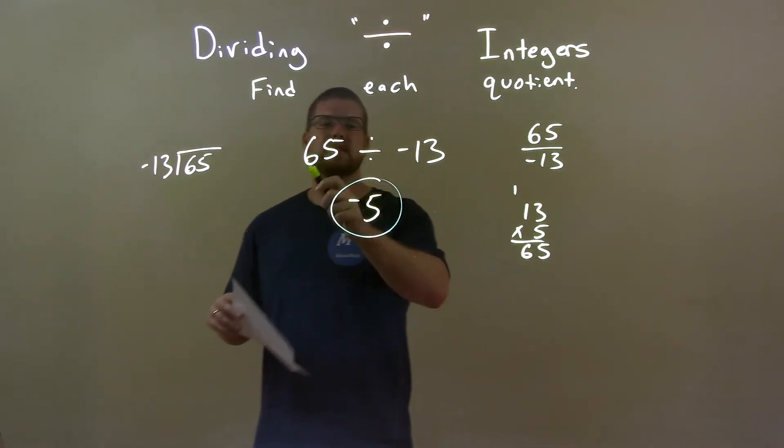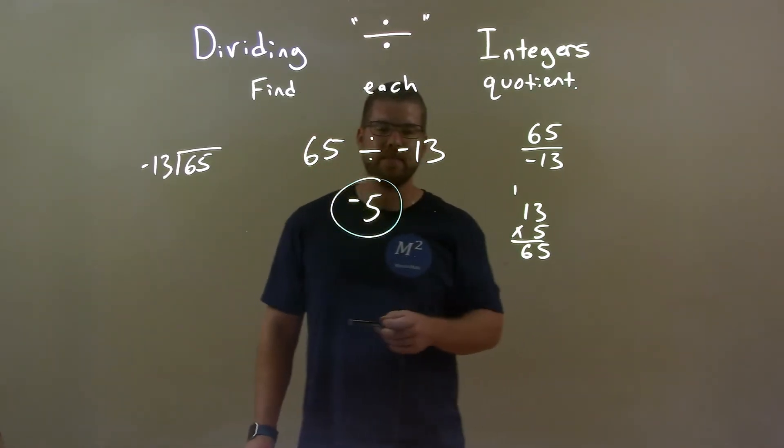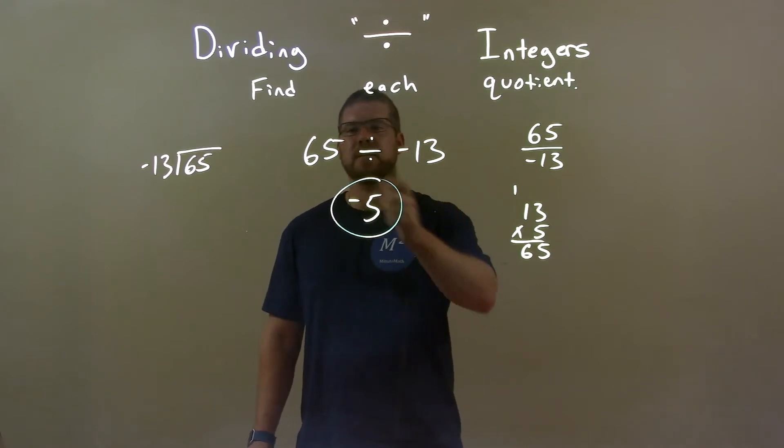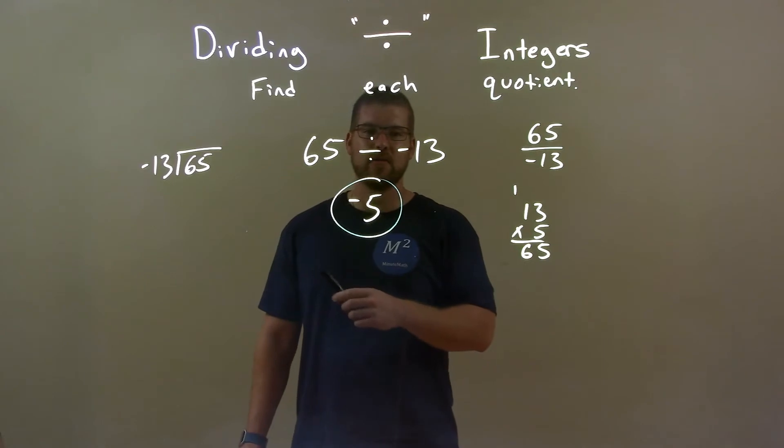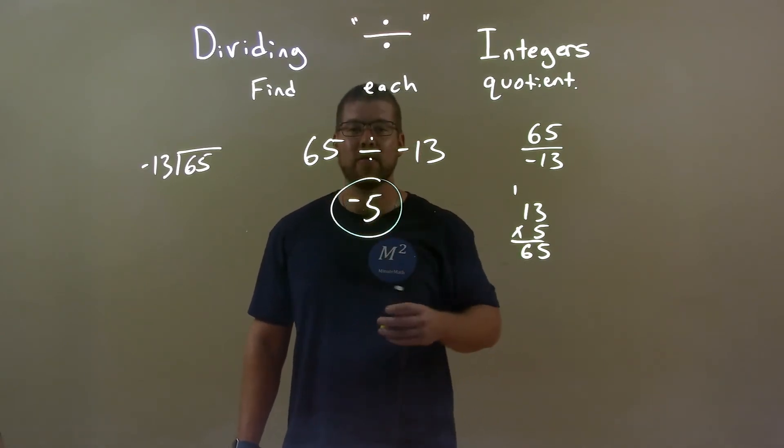So quick recap. We're going to know that 13 goes into 65 five times. And then a positive divided by a negative is a negative. So our final answer, negative 5.